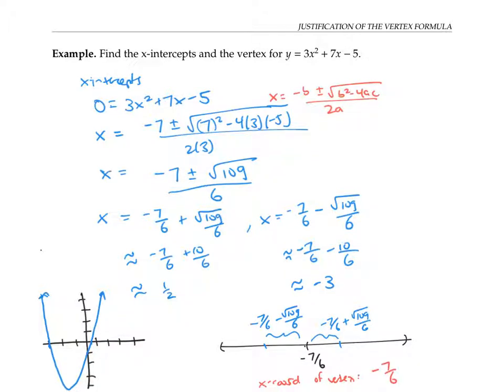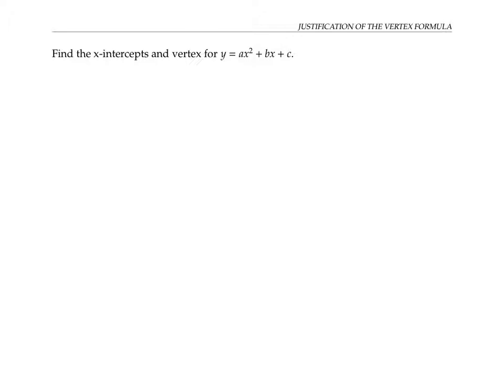Notice that I got that number from the quadratic formula. More generally, if I want to find the x-intercepts for any quadratic function, I set y equal to zero and solve for x using the quadratic formula: negative b plus or minus the square root of b squared minus 4ac all over 2a. The x-intercepts will be at these two values.